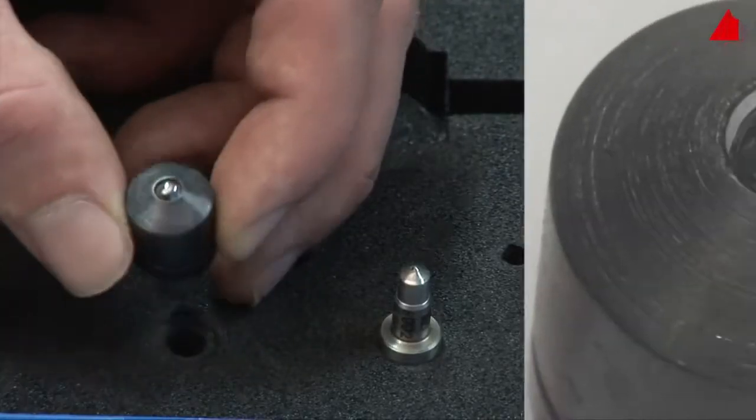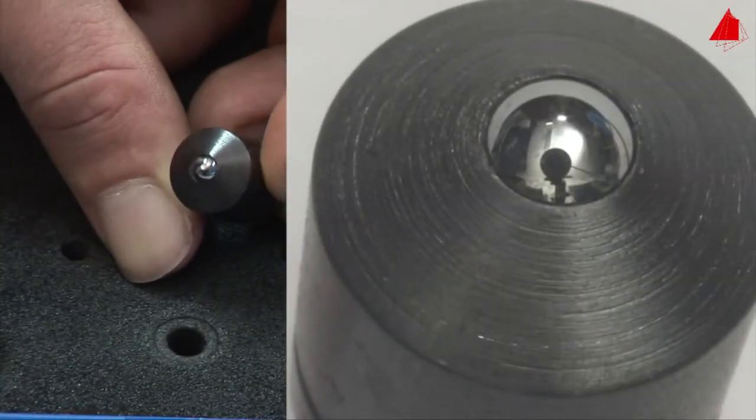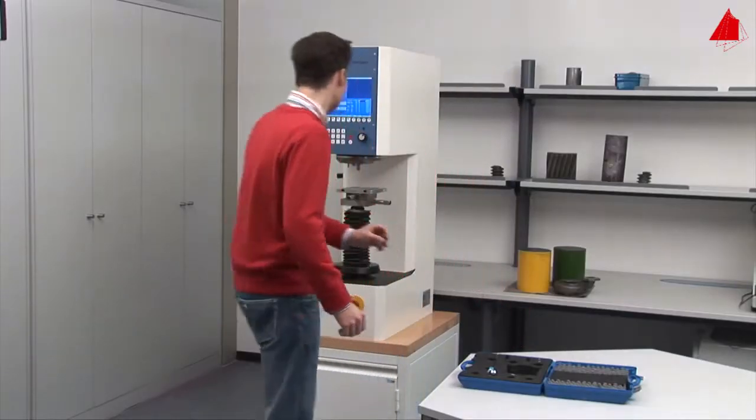The tester selects a suitable spherical indenter and inserts it into the holding device of the testing machine.